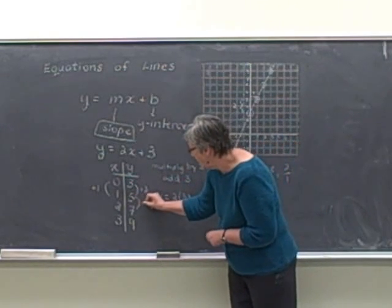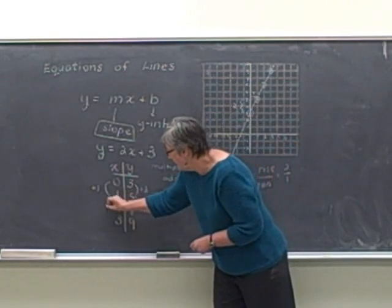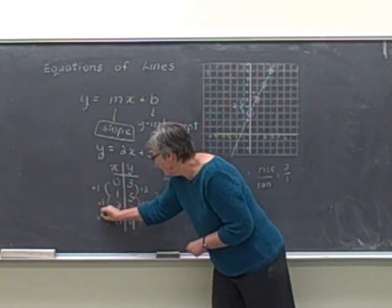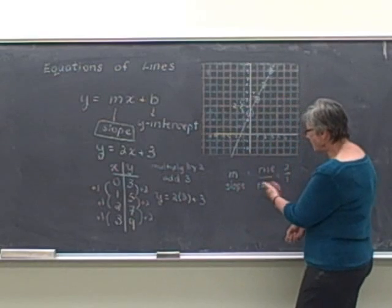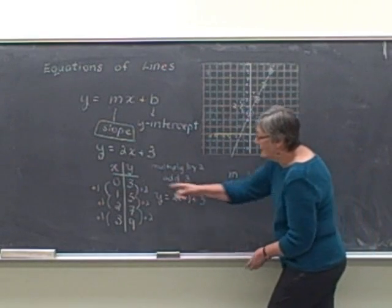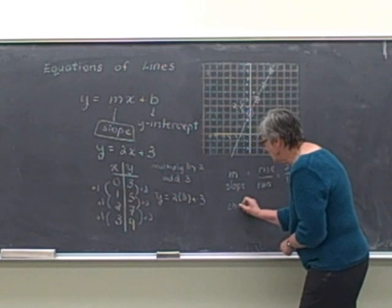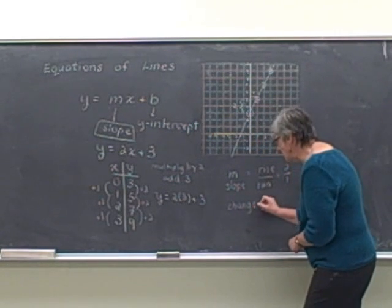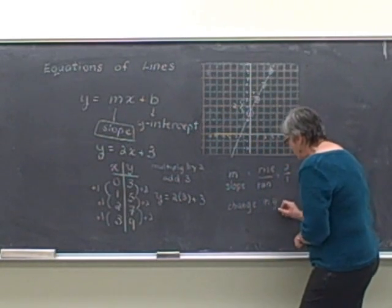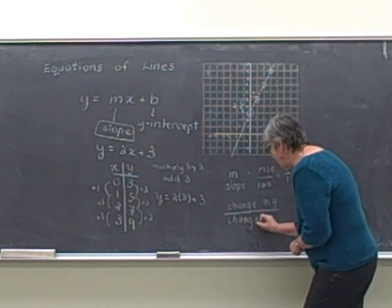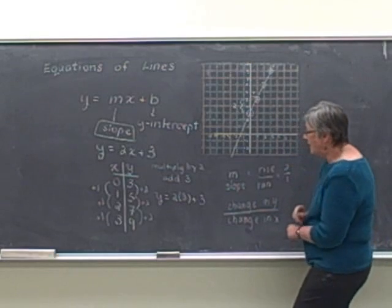From 5 to 7, I've increased by 2. Here by 1, here by 2, and here by 1. And our slope here, the rise over run, can also be translated to be the change in the y or the change in the outputs divided by the change in the x values or the change in the inputs.